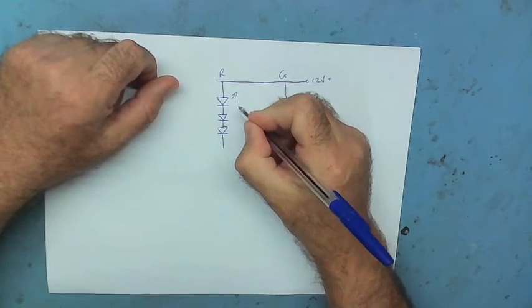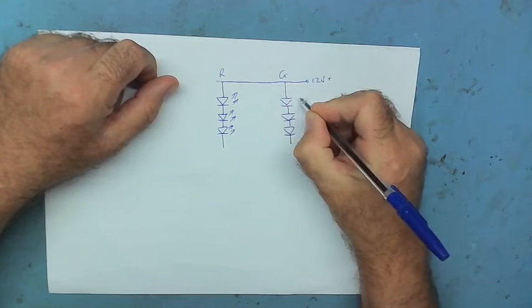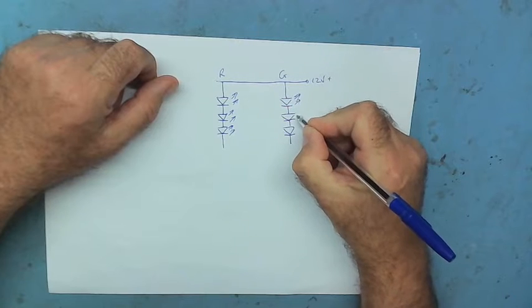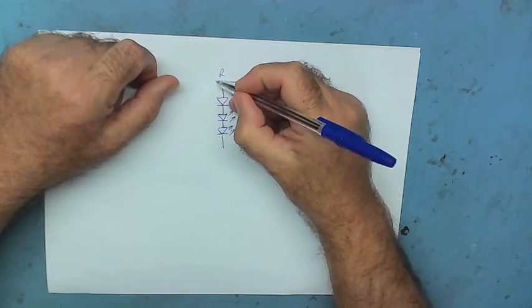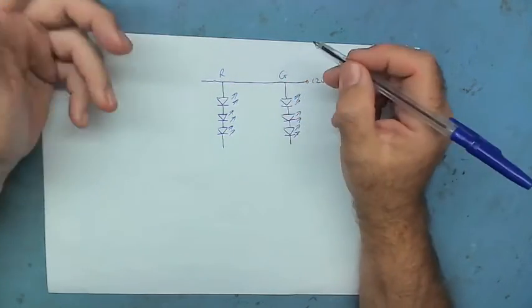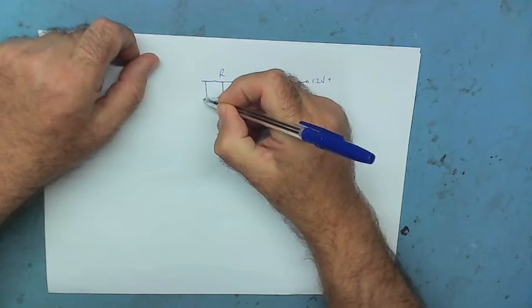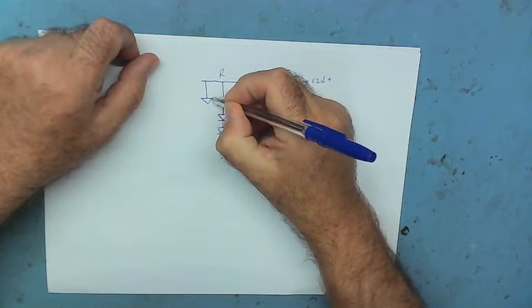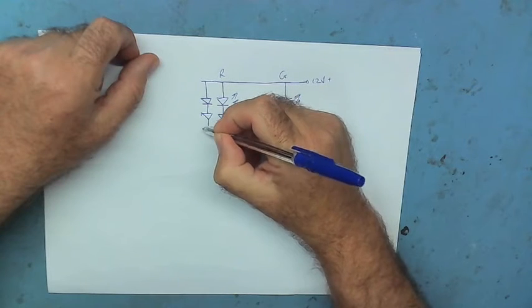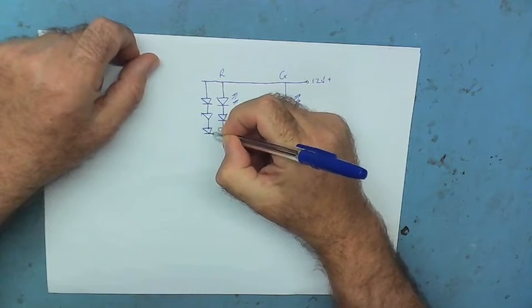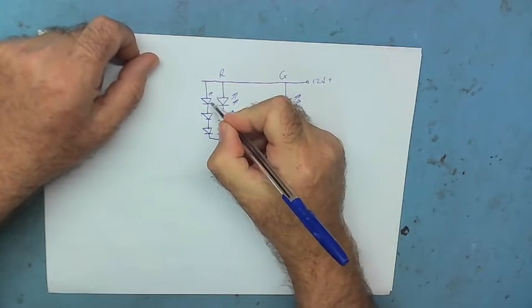We just want to show you a working channel and the non-working one and you'll see. Now, let's make these LEDs, shall we? This is the symbol for an LED with the little arrows pointing out. OK.